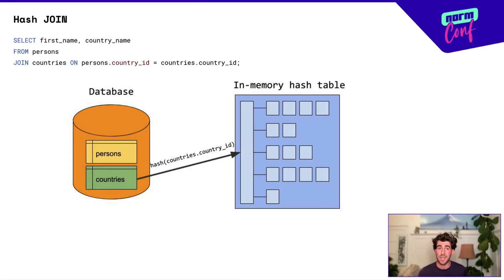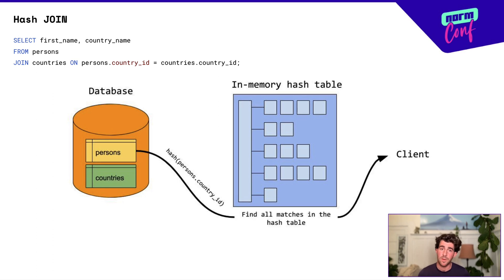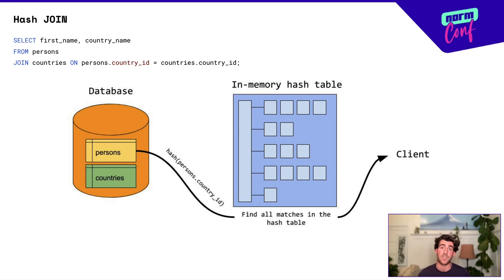Because it's so fast is how a lot of SQL queries actually work. If you're joining data together, depending on what the tables look like, you might be doing a hash join, where it takes one table, turns it into a hash table, and then iterates through the other table doing that hash lookup, which as we just learned is really quick to get those matches.